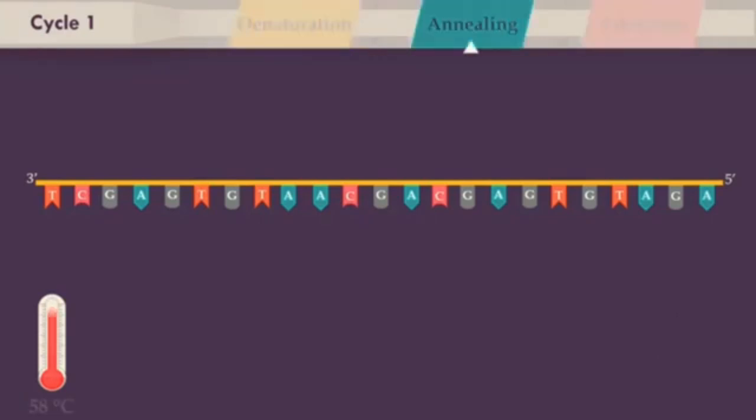In the next step, the reaction temperature is lowered to 58 degrees Celsius, allowing annealing of the forward primer to its complementary part of the single stranded DNA template. The annealing temperature relies directly on length and composition of the primers.